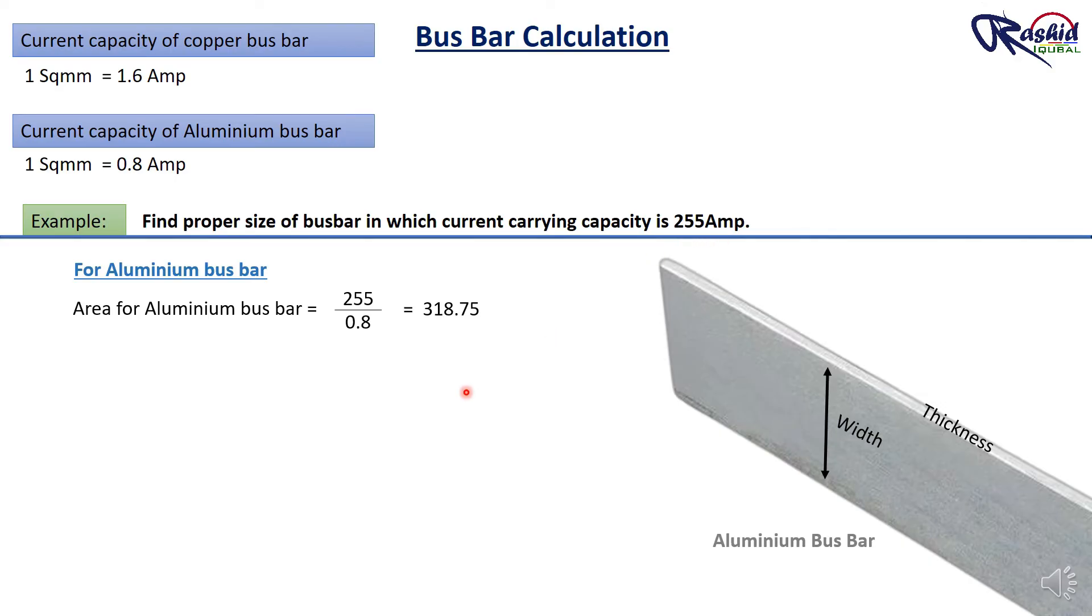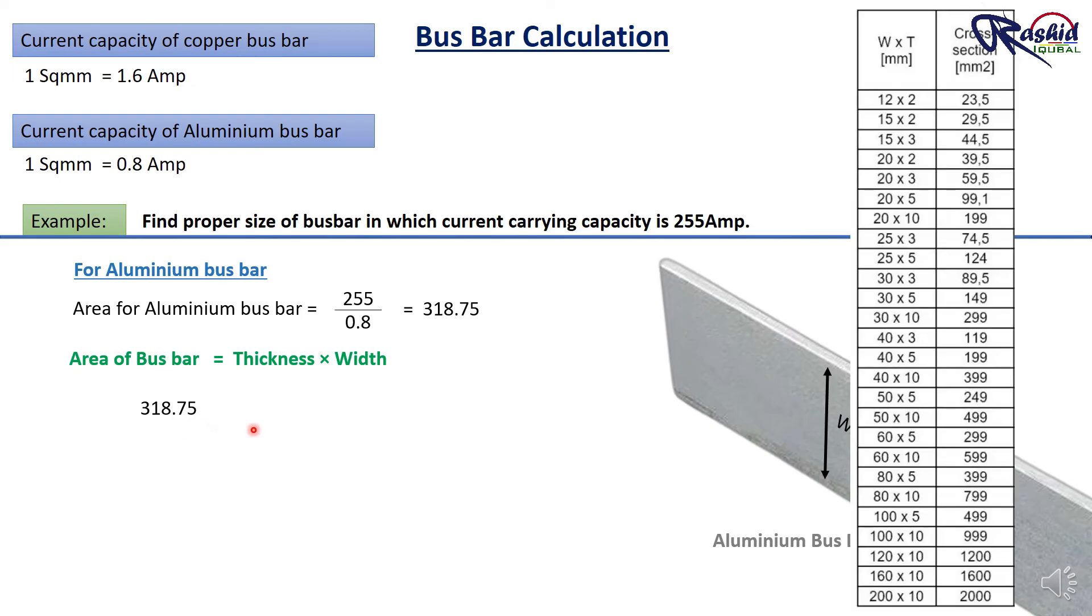So to find the suitable size of aluminium busbar, we use the formula same area equal to thickness multiplied by width. And we have calculated the area that is 318.75 square mm. And we are choosing a thickness of 10 mm. It depends on you. You can choose as per your load, as per your current carrying capacity or as per your requirement. But here I am choosing 10 mm.